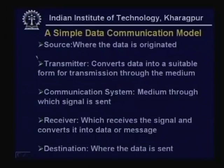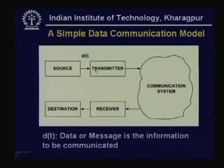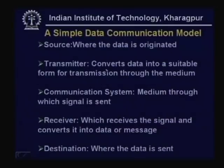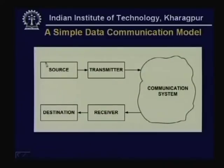Any system which can send, process, and receive data can be a source. Then you will require a transmitter — a device which converts the data sent by the source into a suitable form for transmission through the medium. The source generates data and the transmitter converts it into a suitable form which can be sent through the communication system. The third component is the communication system, the medium through which the signal is sent.